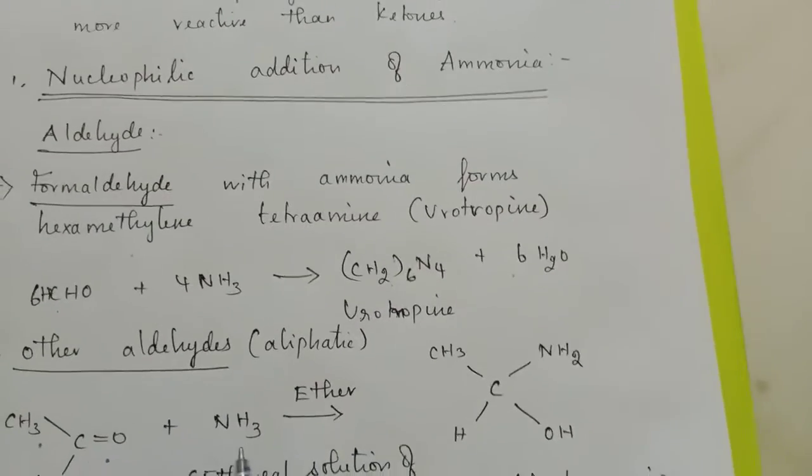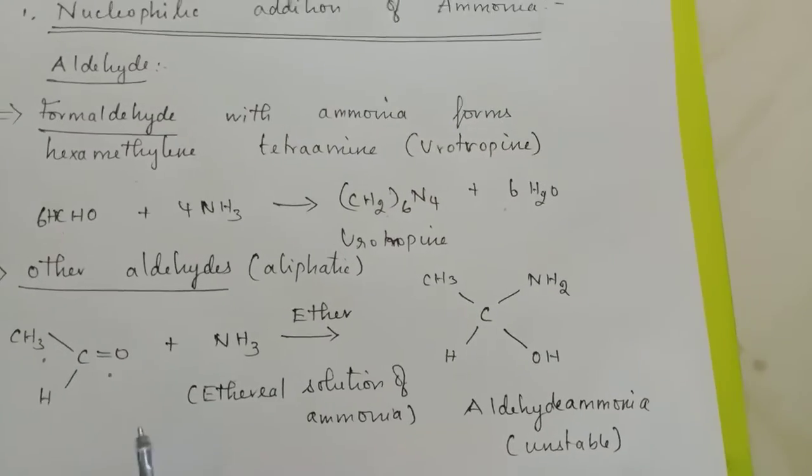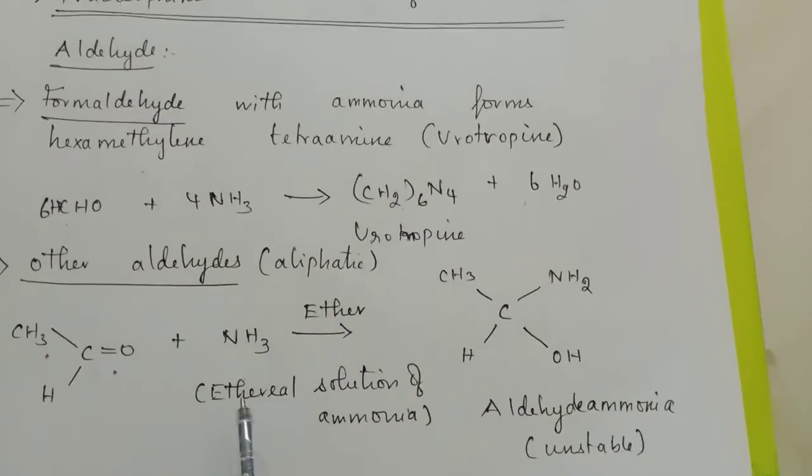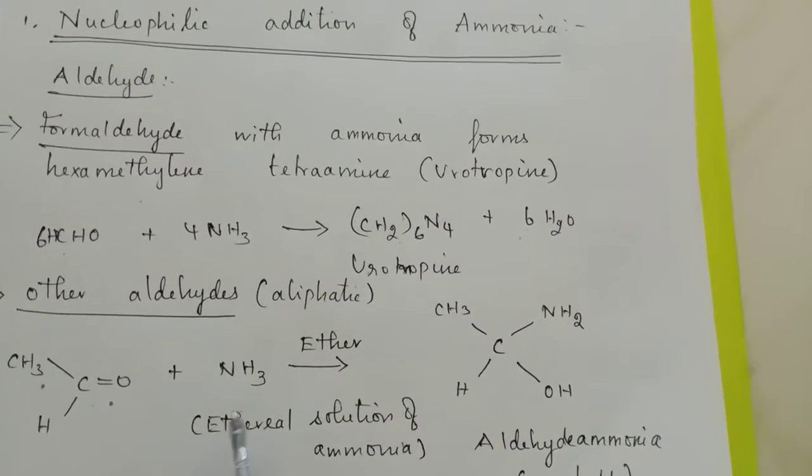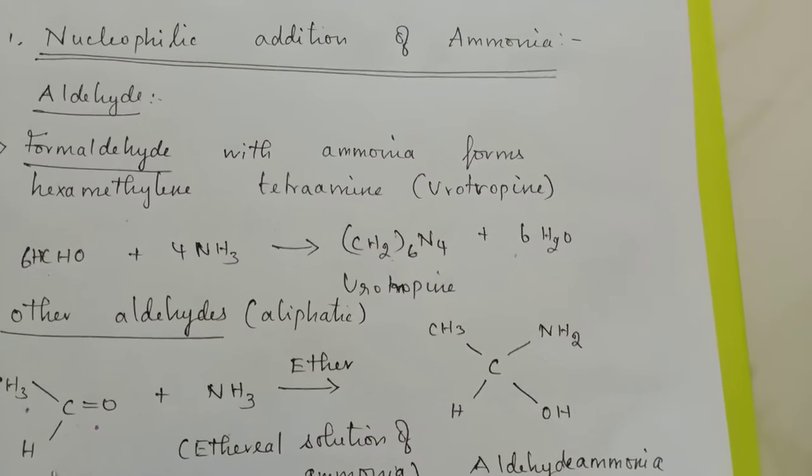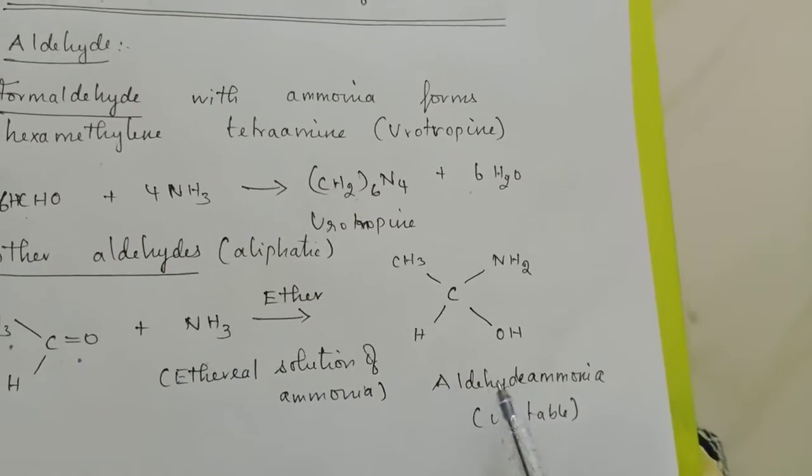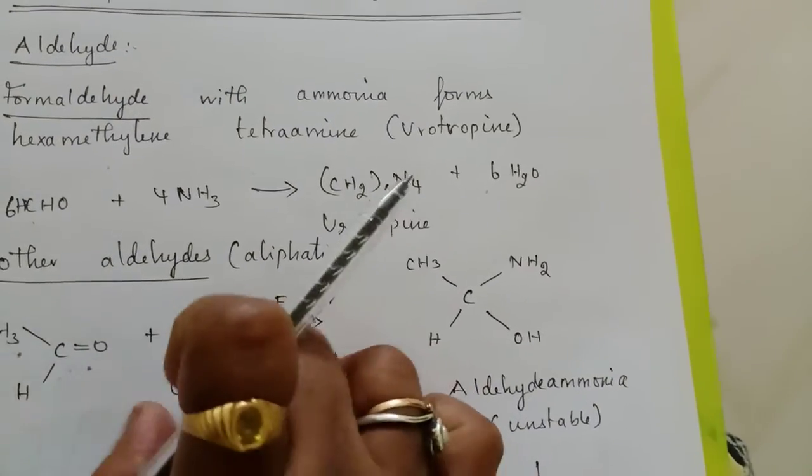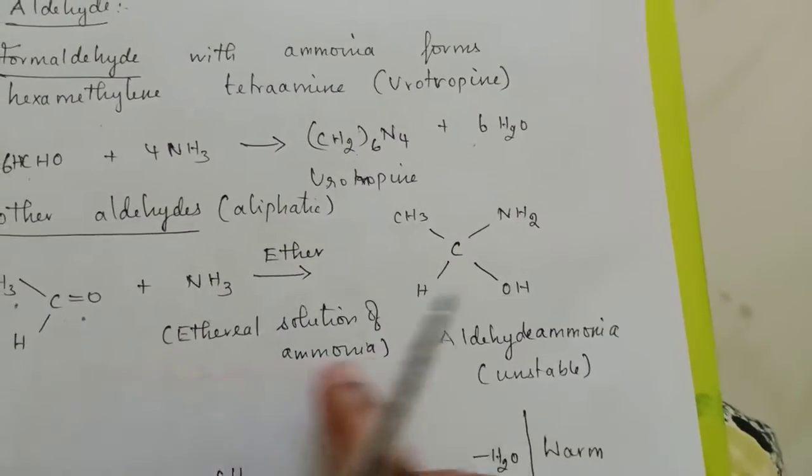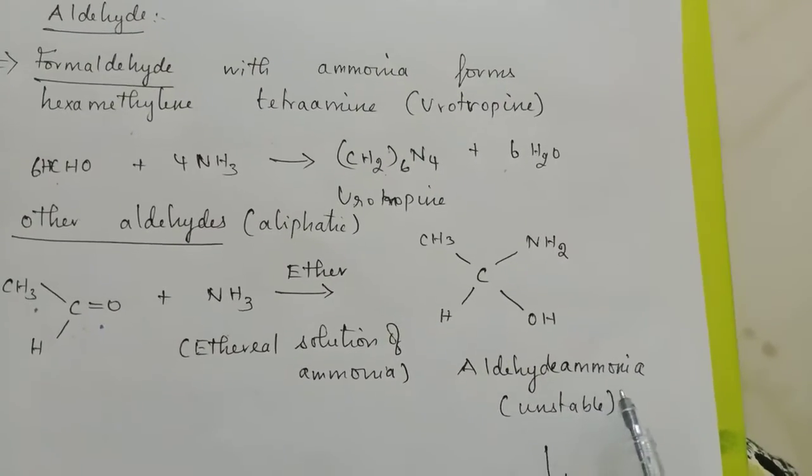But if it is other aliphatic aldehydes like ethanal, propanal, whatever, any aliphatic aldehyde with ammonia, over here the ethereal solution of ammonia reacts with any aldehyde in the presence of ether. What will happen is the complex will form, so addition of ammonia with the aldehyde leads to aldehyde ammonia.